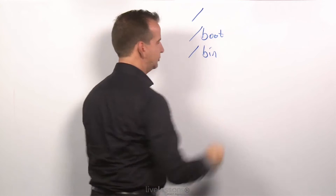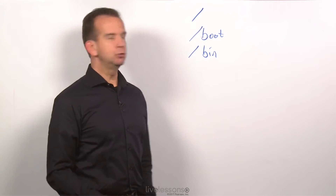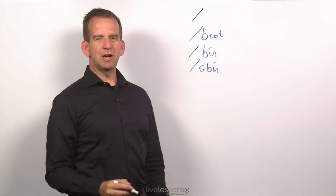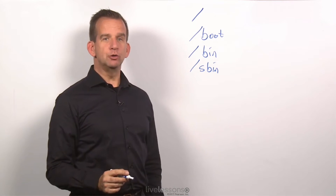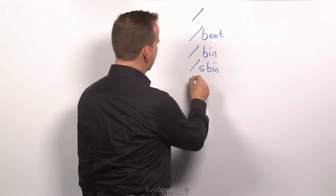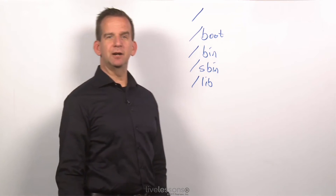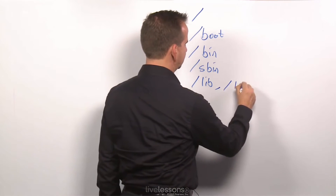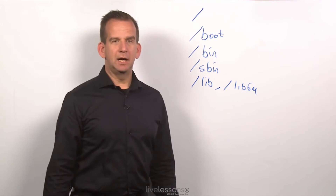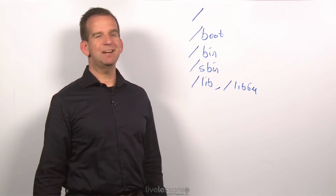Then there is /bin, which is for binaries accessible by normal users. And there is /sbin as well, which is for system binaries — the program files that the root user will use to administer the system. These binaries and system binaries work with libraries as well, and these libraries are in /lib as well as /lib64. These are the additional library files needed to run the binaries in /bin and /sbin.